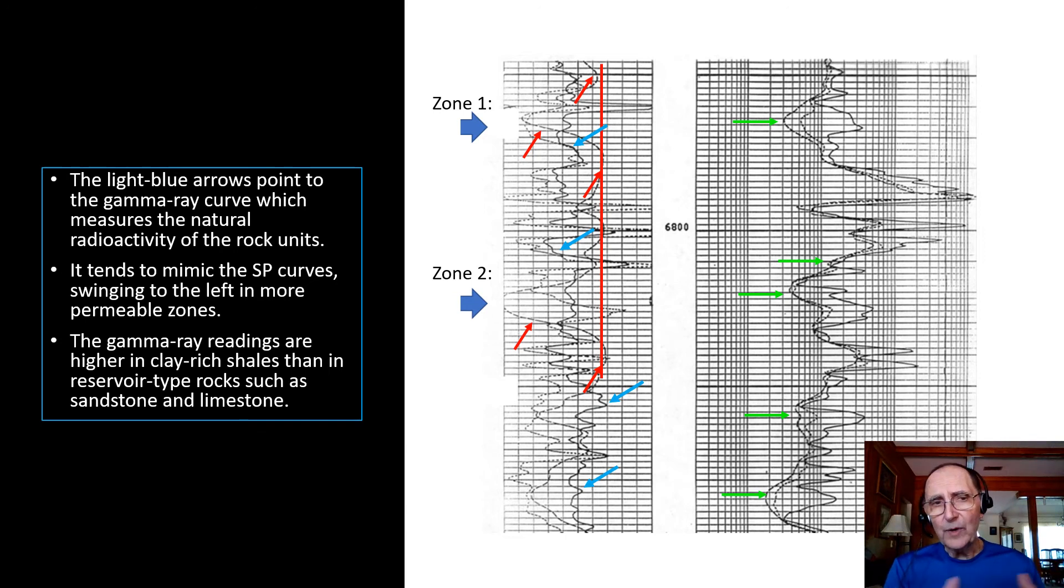The light blue arrows point to the gamma ray curve, which measures the natural radioactivity of the rock units. The gamma ray curve tends to mimic the SP curves, swinging to the left in more permeable zones. Gamma ray readings are higher in clay-rich shales than in reservoir-type rocks such as sandstone and limestone.